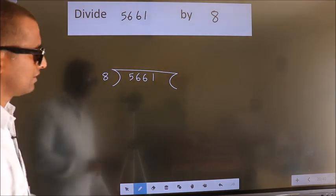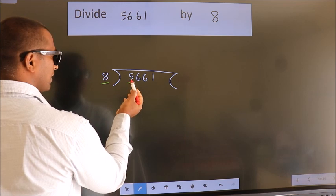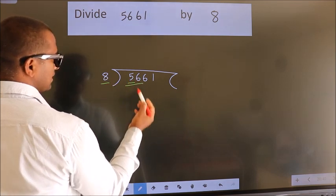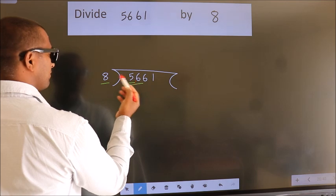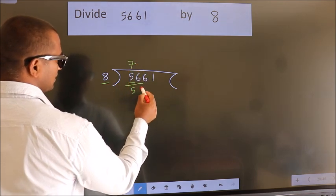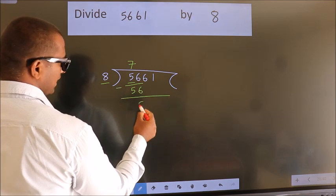Next. Here we have 5, here 8. 5 is smaller than 8, so we should take two numbers: 56. When do we get 56 in the 8 table? 8 sevens, 56. Now we should subtract. We get 0.